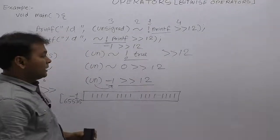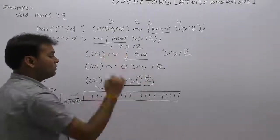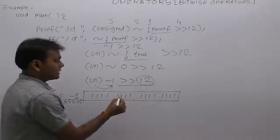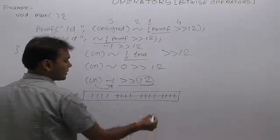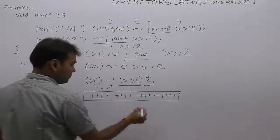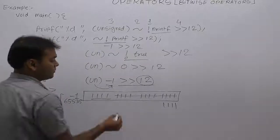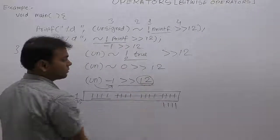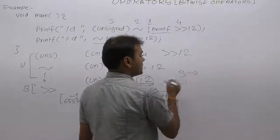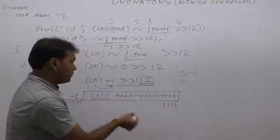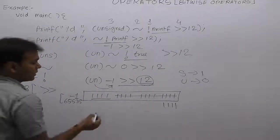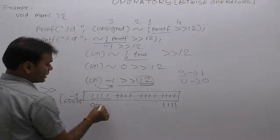For right shift: remove 12 bits. Since the operator is right shift, 12 bits are removed from the right-hand side and those bits are deleted. Only four bits remain. After removing 12 bits, we need to insert 12 bits on the left side. In signed case, the inserted bit is the same as the sign bit. But in the unsigned case, all inserted bits are zero. Since the number has been converted to unsigned by type casting, all 12 inserted bits are 0.